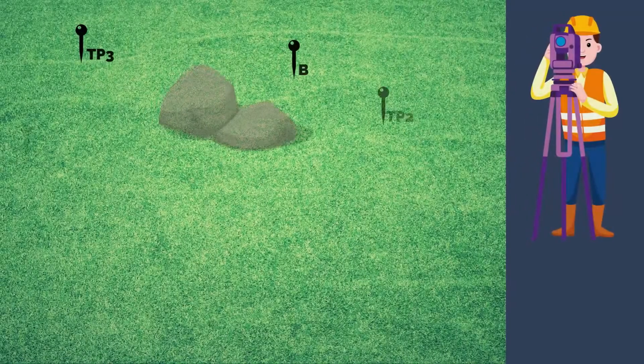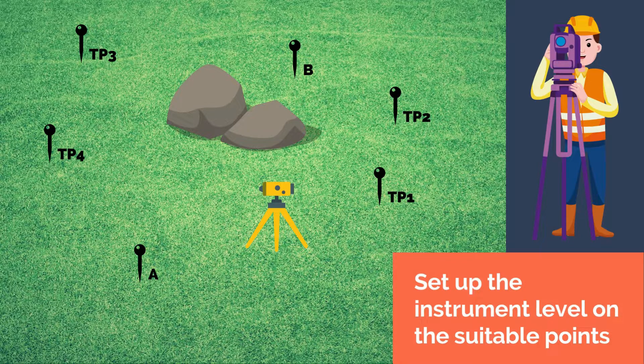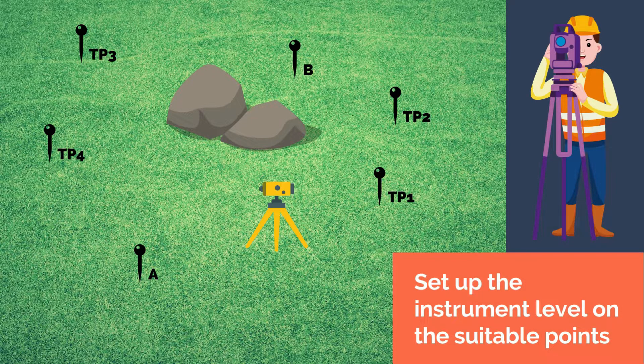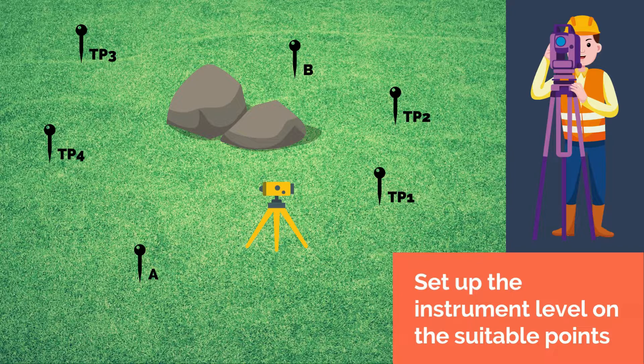The students are then to set up on the suitable points, preferably the midpoints of marks A and B, the instrument level through driving the tripod on the ground. Adjust the height of the instrument to the convenient level of the instrument man, preferably his eye level through tripod leg locks.